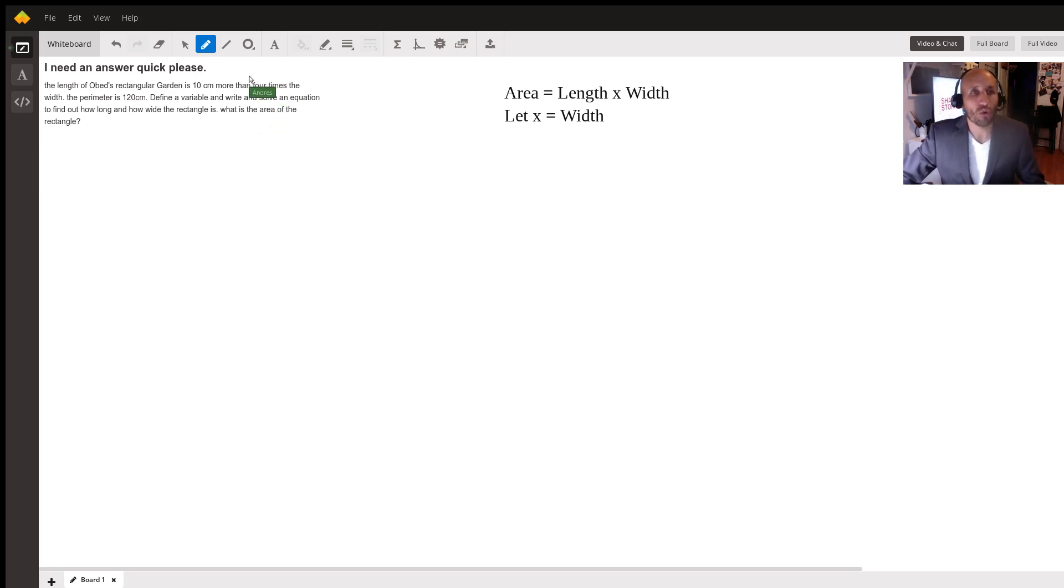First thing I tell my students is always identify the call of the question. That's the most important thing. So the call of the question here is what is the area of the rectangle? They want to know the area, but they also want to define a variable and write and solve an equation. This is all necessary for you to solve for the area, and they have some givens here - the perimeter is 120 centimeters.